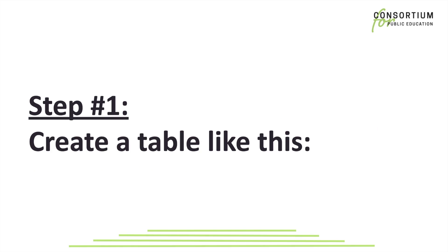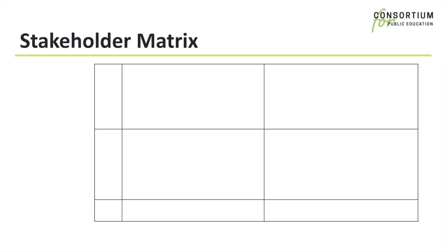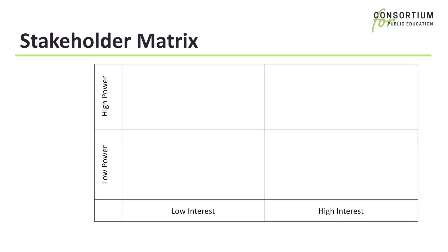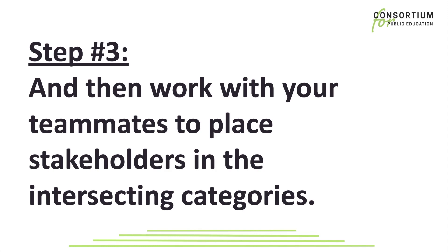Step 1: Create a table like this. Step 2: Label it like this. In the far left column, we have low power and high power. And on the bottom row, we have low interest and high interest.